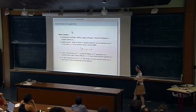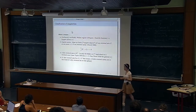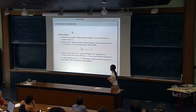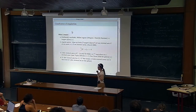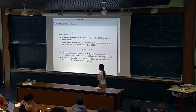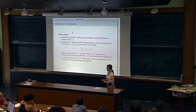Now, regularity theory for minimal sets. What is known? From the definition we only know that minimal sets are closed sets satisfying some minimizing property. But from that we can deduce rectifiability and Ahlfors regularity, which means they admit a true tangent plane almost everywhere. Around those regular points, they are locally minimal surfaces — in other words, smooth manifolds. So there is not much to say about those points.